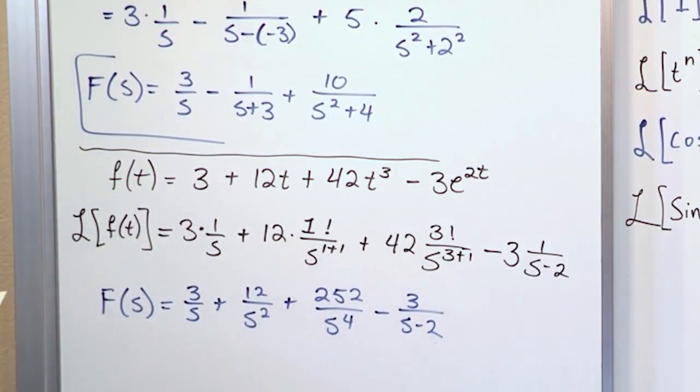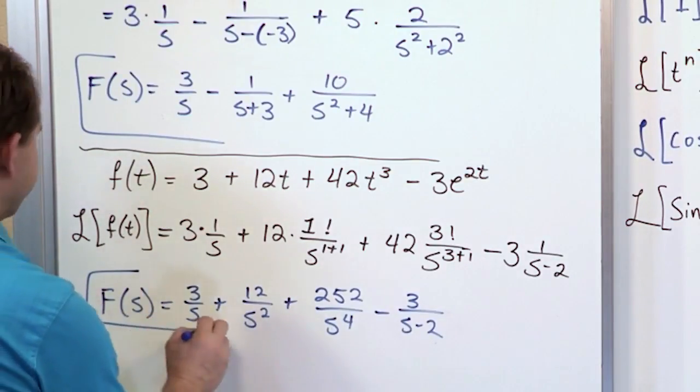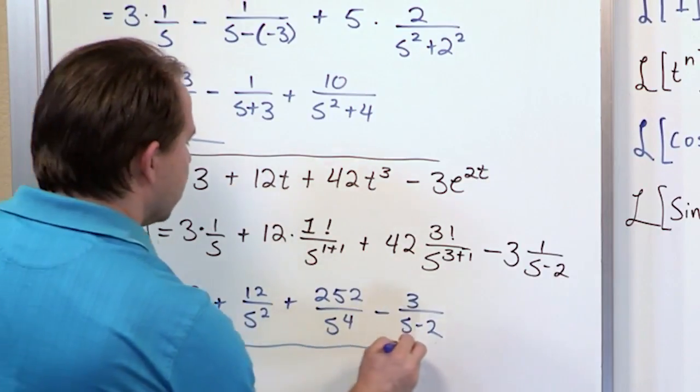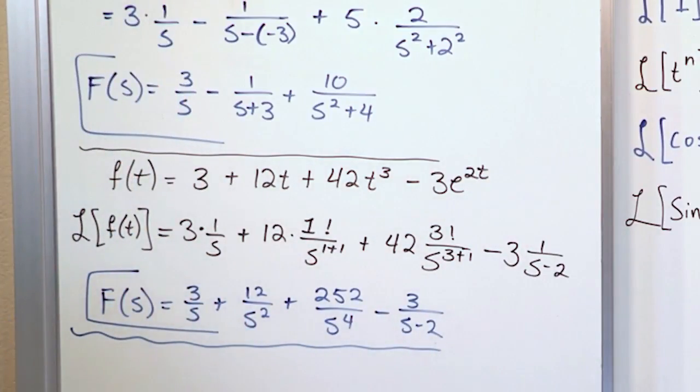Minus 3 over s minus 2. So 3 over s plus 12 over s squared plus 252 over s to the 4th minus 3 over s minus 2. This is the final answer. Let me see if I can fit one more on this page.